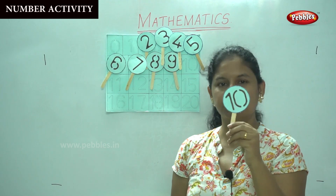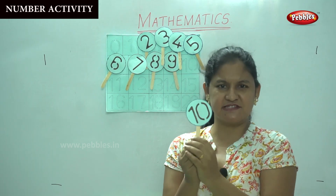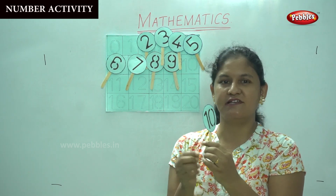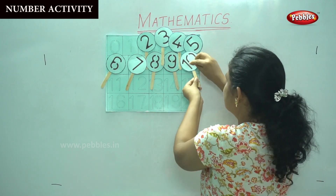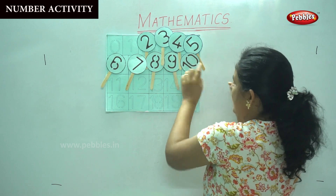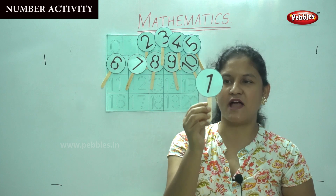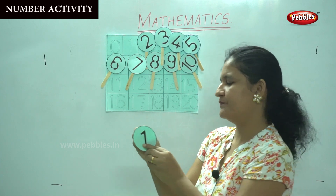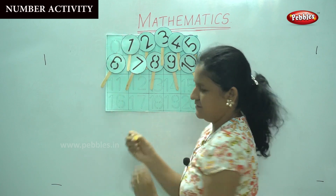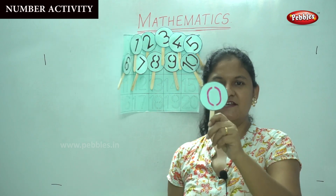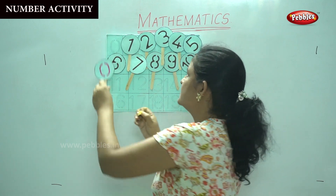1, 0 — so what is this? Is it number 20, children? 1 and 0 — is it number 20? No. It is number 10. So I place it at the side of number 9. Now we are coming to number 1. I place number 1 here on top. And this is number 0.